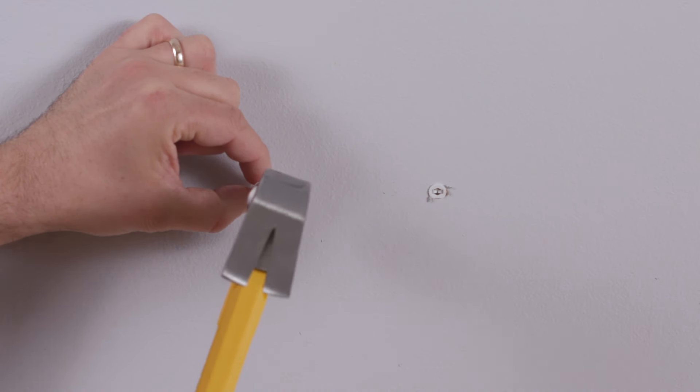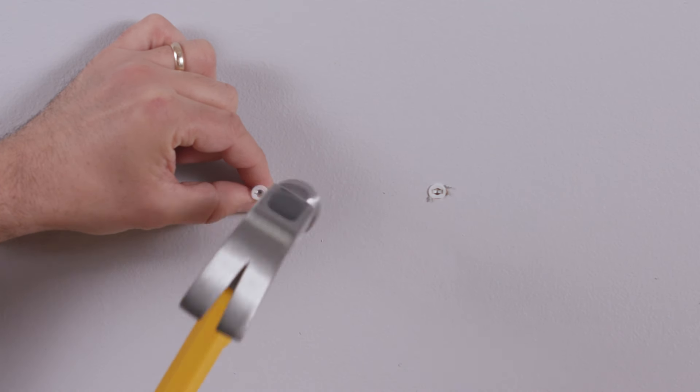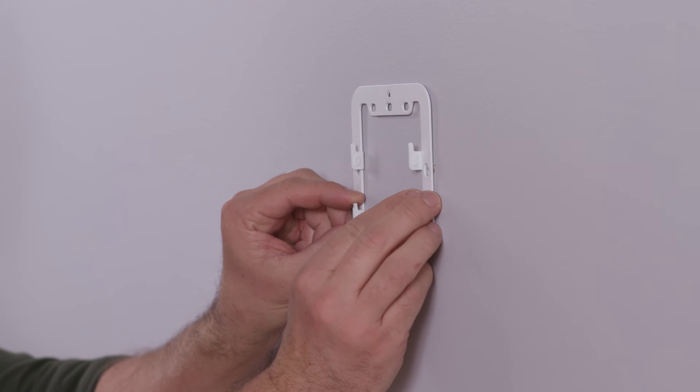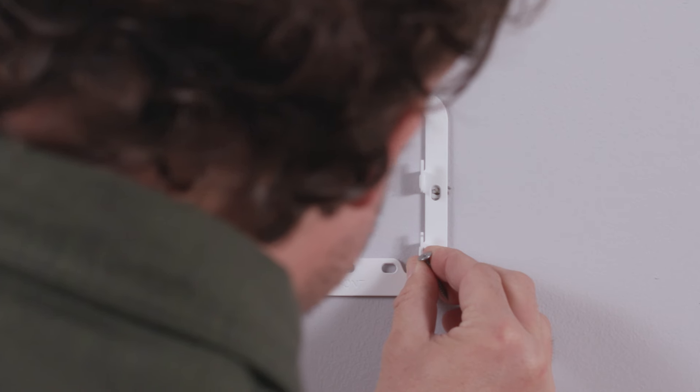Slowly hammer each of the anchors into the holes until they are flush with the wall. Place the wall mount against the wall, then align the holes with the installed anchors.